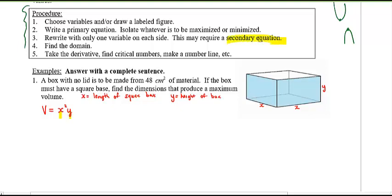There must be a secondary equation, and there is — because we have another piece of information: 48 centimeters squared of material. Thinking about material means surface area. The material used is the base, which is x squared, plus four sides — we have four of the same thing and no top. This equals 48, so the secondary equation is: x squared plus 4xy equals 48.